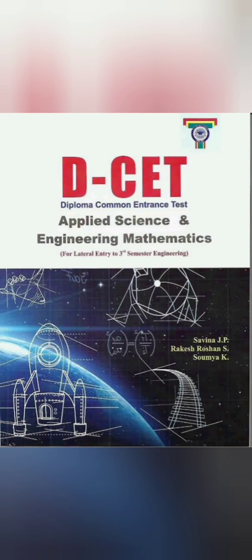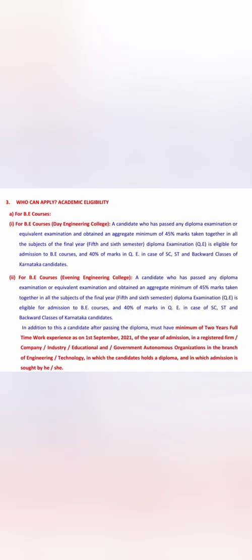For exam preparation, for your main branch you have already covered the engineering subjects studied in your diploma over six semesters. But for Applied Science and Applied Mathematics, you need to refer to some books and guides. You can find a book called 'DCET Applied Science and Engineering Mathematics' by Savina, J.P. Rakesh, Roshan, and others. You can buy this book to prepare for those first 80 marks.